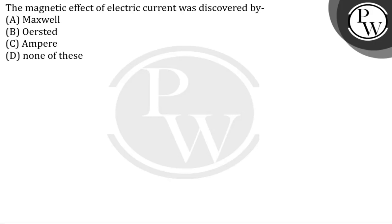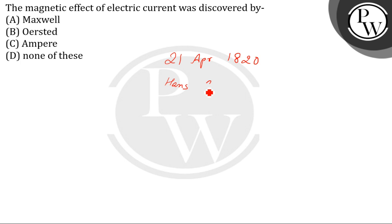The question given here is: the magnetic effect of electric current was discovered by whom? On April 21st, 1820, Danish physicist Hans Christian Ørsted discovered the magnetic effect of an electric current when he noticed that the needle of a compass near